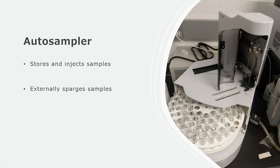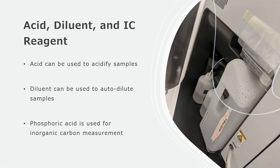The auto sampler is what we use to inject our samples into the instrument. It holds 93 samples in 20 milliliter glass TOC vials, so this is what you'll need to put your samples into. The auto sampler is often equipped with an external sparge kit which uses needles to sparge samples with carrier gas. This allows inorganic carbon to be purged from the samples if you're only interested in organic carbon analysis.